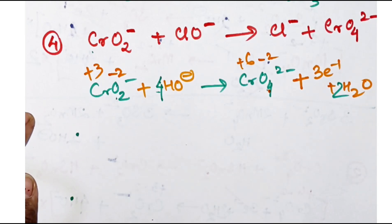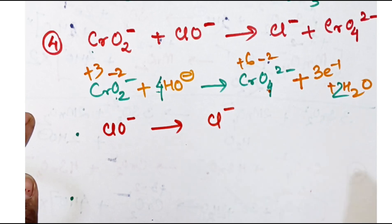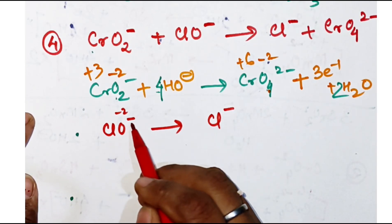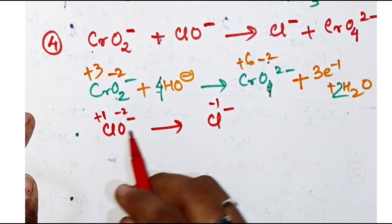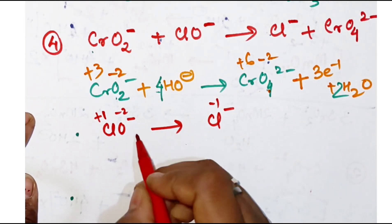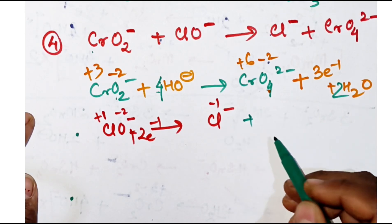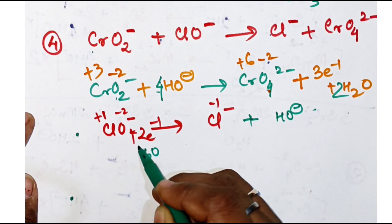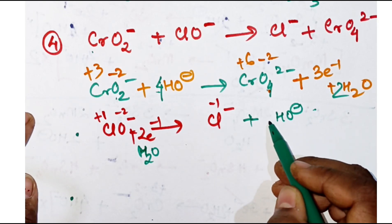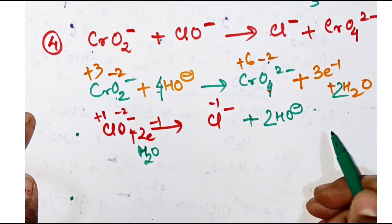Now the other half: ClO⁻ giving Cl⁻. Oxidation number of chlorine in ClO⁻: x minus two equals minus one, so x equals plus one. In Cl⁻ it is minus one. From plus one to minus one it has gained two electrons. Oxygen is less on the right side, so add OH⁻ to the right. Putting two OH⁻ and one H₂O balances oxygen and hydrogen on both sides.